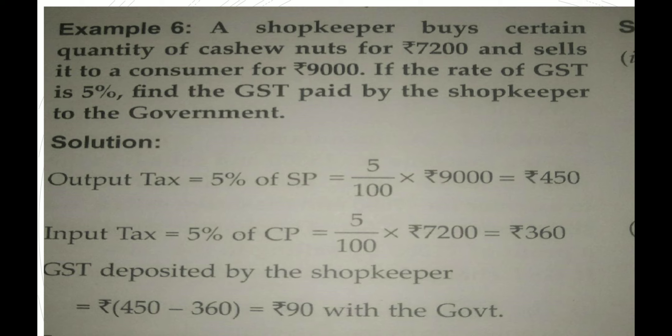A shopkeeper buys a certain quantity of cashew nuts for Rs. 7200 and sells it to a consumer for Rs. 9000. If the rate of GST is 5%, find the GST paid by the shopkeeper to the government.